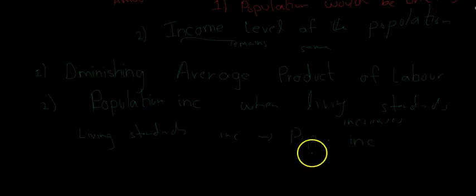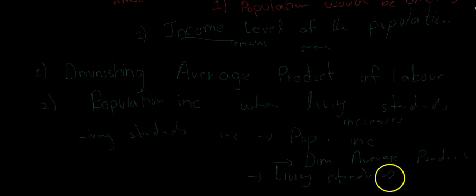So what happens: living standards increase, then population increases, then the concept of diminishing average product comes in, and what actually happens is that living standards fall. So there is a cycle which I'll show in a while or in the next video.